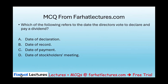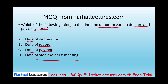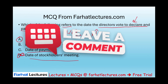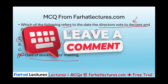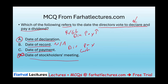Let's look at a multiple choice question from FarhatLectures.com: 'Which of the following refers to the date that the directors vote to declare and pay dividend?' We have three important dates: date of declaration, date of payment, date of record, and date of stockholders meeting. The answer is the date of declaration. On the date of declaration, we debit retained earnings and increase dividend payable — we have a liability. Date of record has no entry. On the date of payment, we debit dividend payable and credit cash.